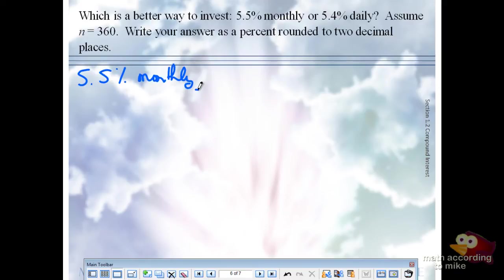We'll do the monthly together. I'll have you take a minute to do the daily. So the setup for this APY will be 1 plus 0.055 divided by 12, raised to the 12, minus 1.